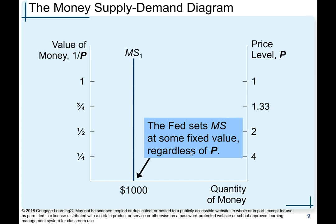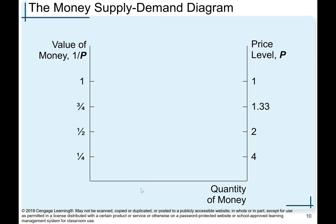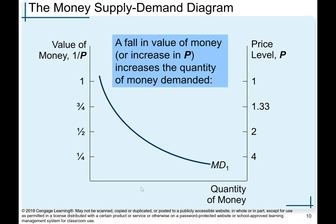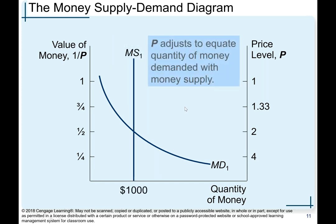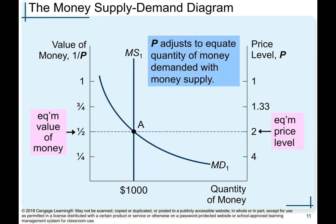If the Federal Reserve sets money supply at some fixed value, say $1,000, a fall in the value of money or increase in price increases the quantity of money demanded. When you put money supply and money demand together, you establish equilibrium — price adjusts to equate quantity of money demanded with money supplied.